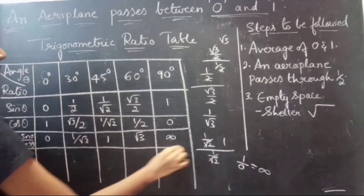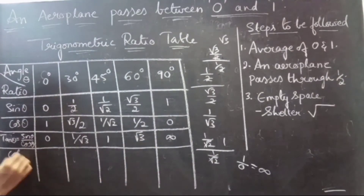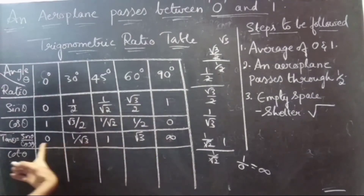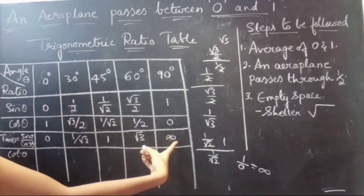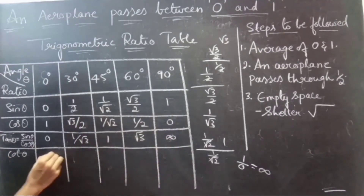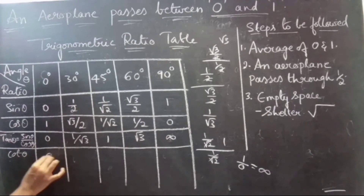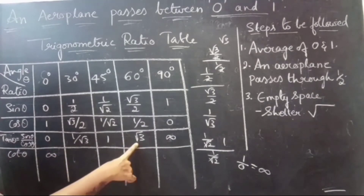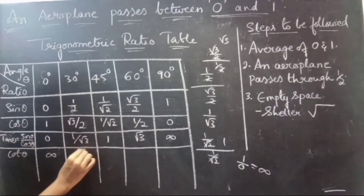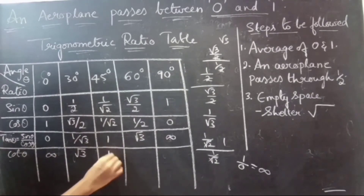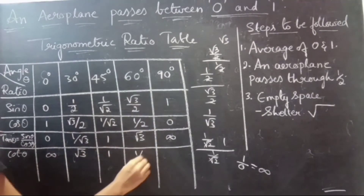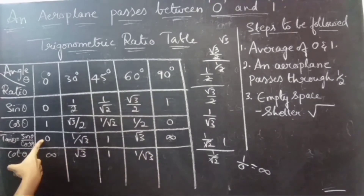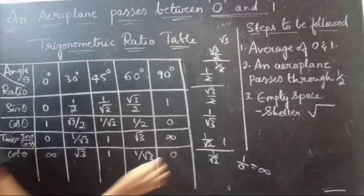Now write for cot. Cot theta is simply the reverse of tan. Write the ratios in reverse order: cot 0° is infinity, cot 30° is root 3, cot 45° is 1, cot 60° is 1 by root 3, and cot 90° is 0.